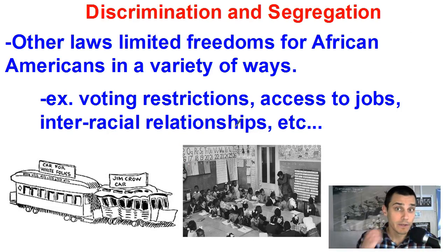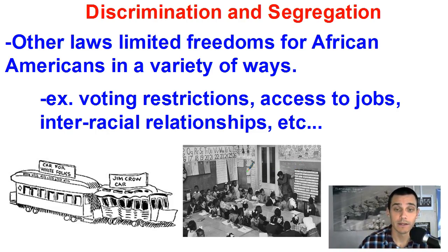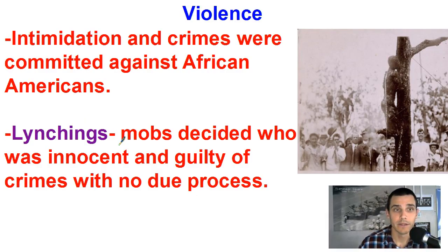In addition to segregation, there were other laws that limited freedom for African Americans in a variety of different ways — voting restrictions, voter intimidation, access to jobs, interracial relationships were often illegal or heavily restricted. The education system also had segregation, and this debate over separate but equal would take decades to play out in the court system. It was a thorough system of discrimination and segregation.